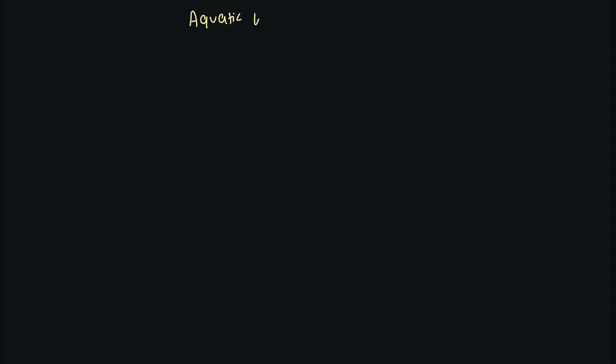In this lecture we will discuss about aquatic weeds and their management. Aquatic weeds are those weeds which complete one or more growth stages in an aquatic environment — that means where water is present — and they cannot survive in a completely dry environment.